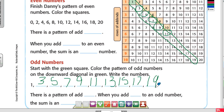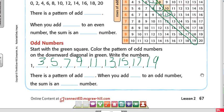So there is a pattern of adding how many each time? Two. So when I add two to an odd number, the sum is going to be odd.